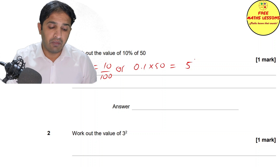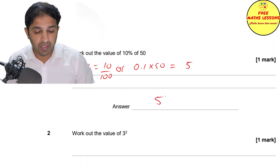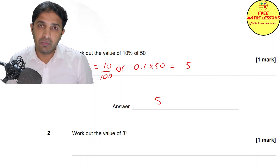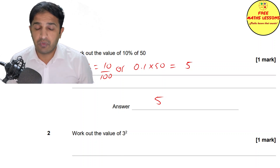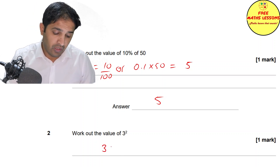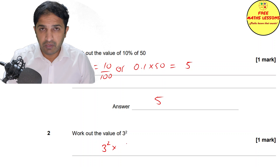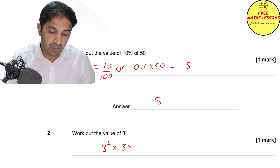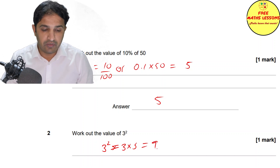Multiply 0.1 by 50 and you get five, so the answer to the first question is five. For question two — work out 3 squared — there is a square button on the calculator. If you don't have one, use 3 times 3, which gives you nine.